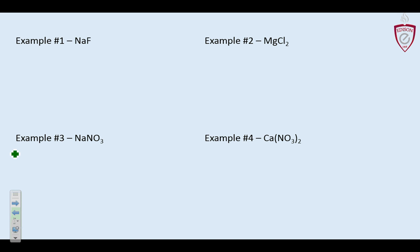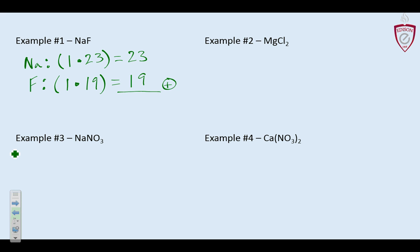First, we're going to do sodium fluoride. What I do is I like to list the elements first — sodium and fluorine. Then I count the sodium atoms: in this example, I've got one. I multiply that by the atomic mass of sodium, which is 22.9 on the periodic table, so we round to 23. Then I go to my next element, fluorine — there's one of them in that compound — and multiply by the atomic mass of fluorine, 18.9984, which we round to 19. So 1 times 19 is 19. Adding 23 and 19 gives us 42 grams per mole.